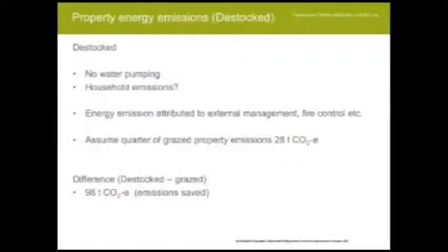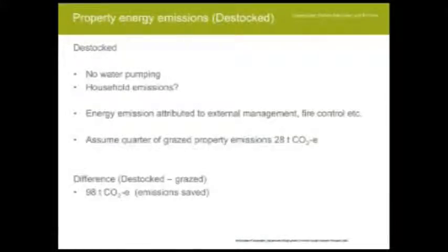For a de-stocked property, there's a lot of conjecture about what will actually happen. You'd turn off water pumps and close off water points. Will someone still live on the property or move elsewhere? What's the energy associated with managing such a property — someone driving in every couple of weeks to check things, or fire control activities? For this analysis I've assumed about a quarter of the grazed property's energy emissions would still apply to the de-stocked property's management. So there's a difference of about 100 tonnes of CO₂, which is still quite small compared to the 2,625 tonnes from methane.